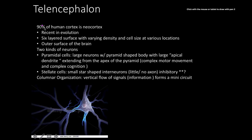About 90% of the telencephalon is considered neocortex — evolutionarily recent, with a six-layered structure of varying cell density and size. It is thickest at areas like the fine motor cortex. Two key neuron types give rise to it: pyramidal cells, which are large neurons with a prominent apical dendrite extending from the apex of a pyramid shape, playing a major role in complex motor movement and cognition; and stellate cells.